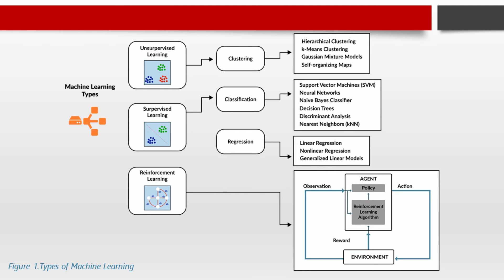The second type is unsupervised learning — a learning method in which the machine learns without any supervision. Training is provided with a set of data that has not been labeled, classified, or categorized, and the algorithm needs to act on that data without any supervision. The basic goal of unsupervised learning is to restructure the input data into new features or groups of objects with similar patterns. In this type, there are no predetermined results, and the machine tries to find useful insights from the huge amount of data. It can be further classified into two categories: clustering and association.